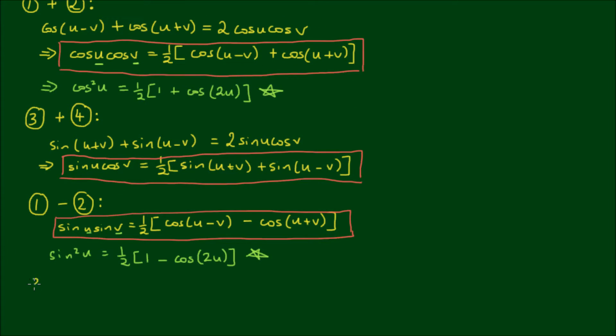confirm for yourself that equation 3 minus equation 4: sin(v)cos(u) is equal to 1/2 of [sin(u+v) minus sin(u-v)]. So these are the four product to sum formulas or formulae.